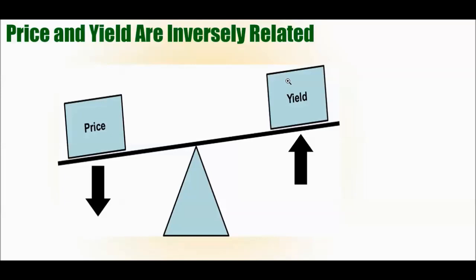Remember, yield is basically the coupon as a percentage of the price. So this should make some sense in that the coupon payment is going to stay the same. If the price goes down, it is now a larger percentage of the price. And that's why a downward movement in price is equal to, or results in, an upward movement in yield.